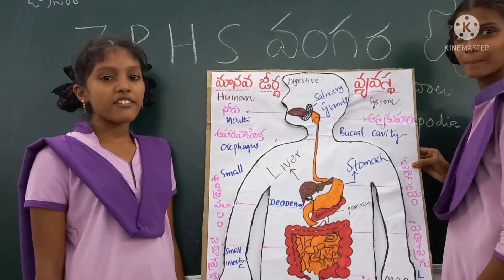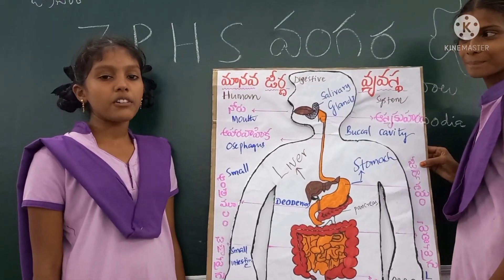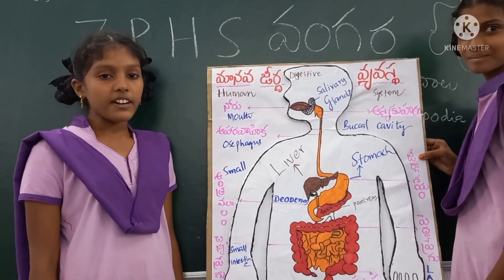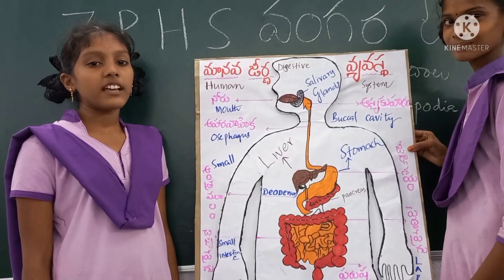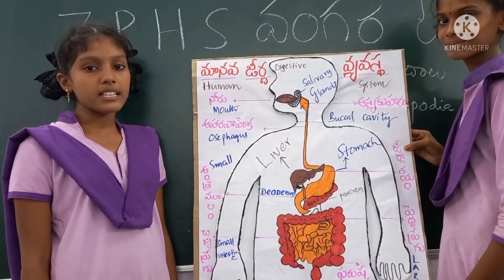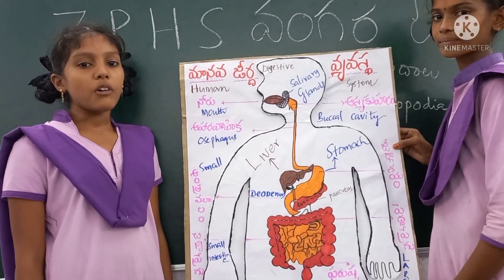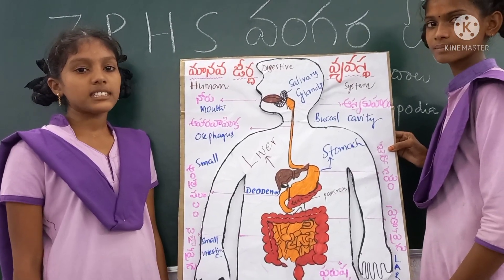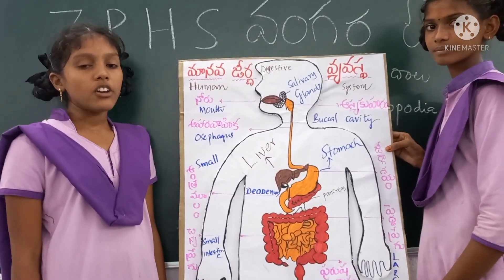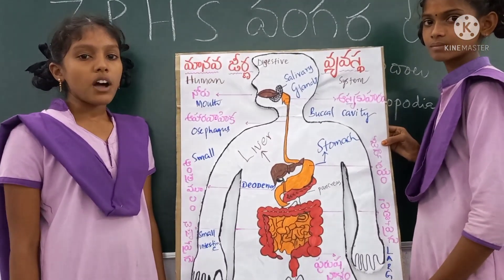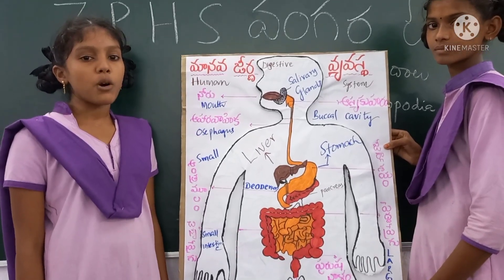Today I would like to speak a few words about our Human Digestive System. Our Human Digestive System has mainly: Mouth, Buccal Cavity, Pharynx, Esophagus, Stomach, Duodenum, Small Intestine, Large Intestine, Rectum, and Anus.